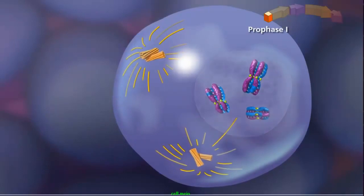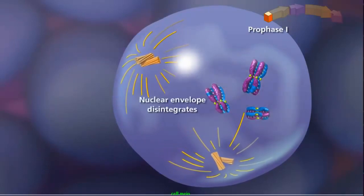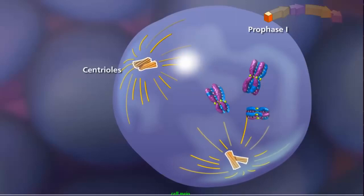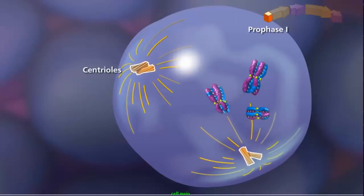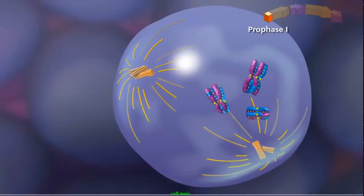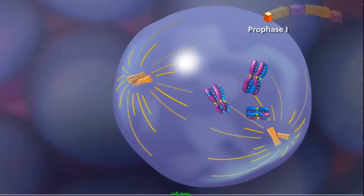Prophase I concludes with the fragmentation of the nuclear envelope as the duplicated centriole pairs move to opposite poles of the cell. As they move, the centrioles extend spindle fibers, forming the meiotic spindle.